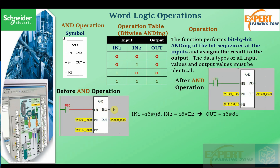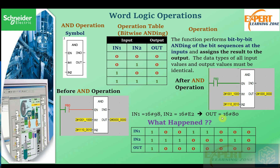Let's take a look at an example. When this AND block is activated, a bit-by-bit AND of these two operands is carried out and the result is assigned to the output. Here we are AND-ing hexadecimal 98 and hexadecimal E2, and the result is hexadecimal 80. You can clearly see the binary equivalent of 98 and the binary equivalent of E2 from your digital electronics class.